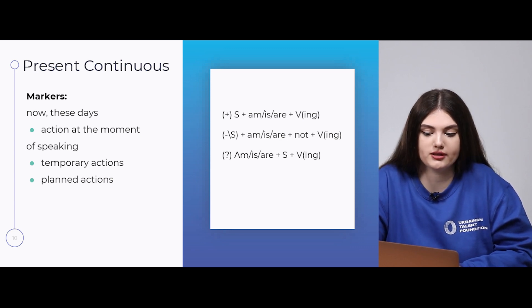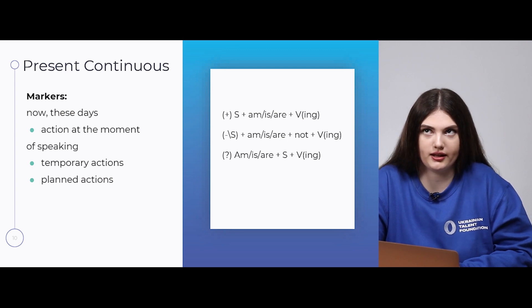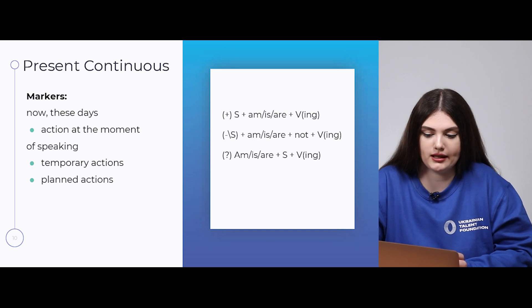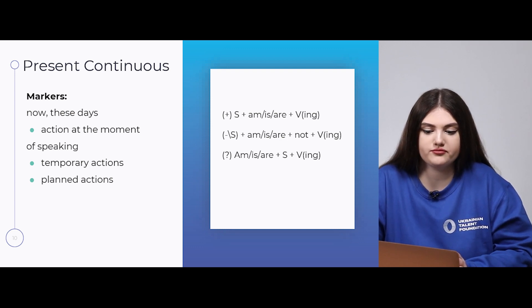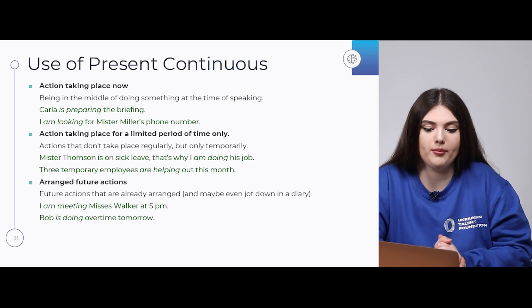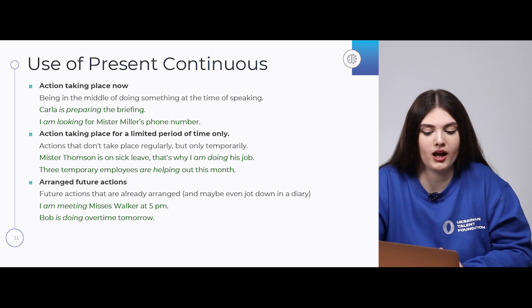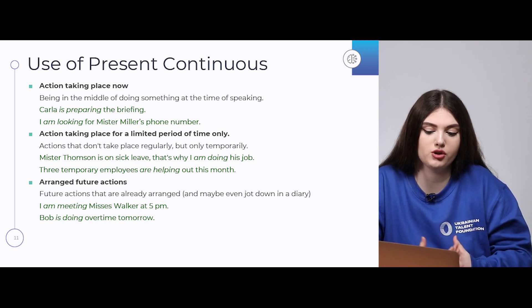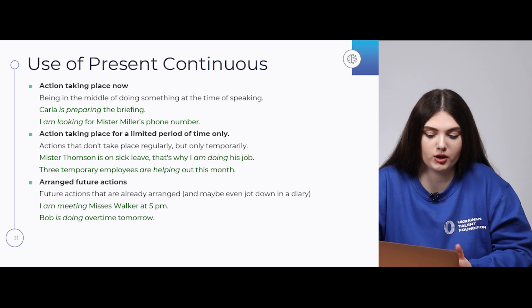If we want to make a negative form, we use subject first, then the verb 'to be,' then add 'not,' and then the verb with '-ing' ending. If we want to make a question, we put the verb 'to be' in first place, then the subject, then the verb with '-ing' ending. Use of present continuous: being in the middle of doing something at the time of speaking, meaning the action is taking place just right now. For example: 'Carla is preparing for briefing' — she is in the process. 'I am looking for Mr. Miller's phone number' — also a process happening right at this moment.